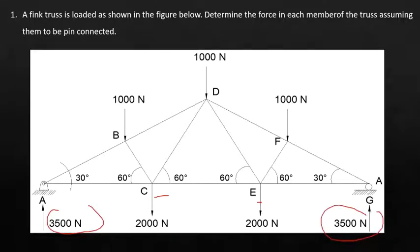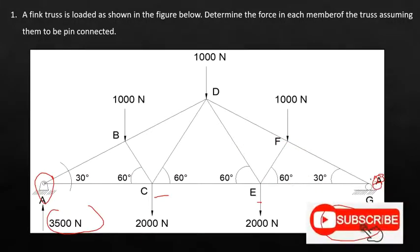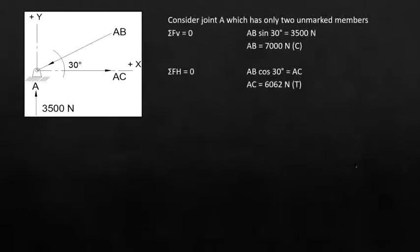By investigation using different methods we can identify the reactions. Since the figure is symmetric, it is simply divided by two. We can also take the moment at A or at G. For example, we take joint A. We choose joint A because we only have two unknown members, so when we sum forces along y we can easily compute AB.